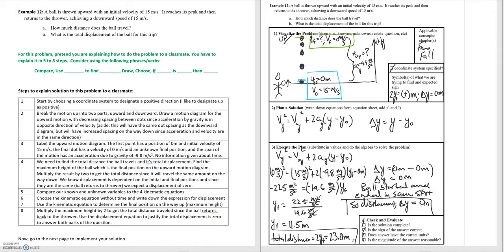In this video we'll be going over example 12. A ball is thrown upward with an initial velocity of 15 meters per second. It reaches its peak and then returns to the thrower achieving a downward speed of 15 meters per second. We're asked to find how much distance the ball travels, and then the total displacement of the ball for this trip.